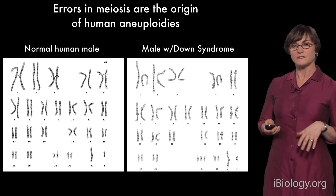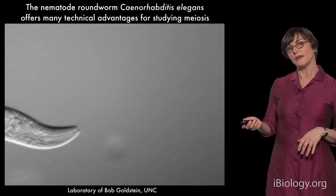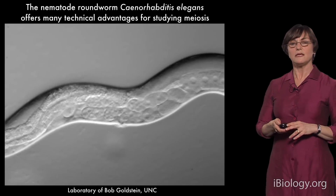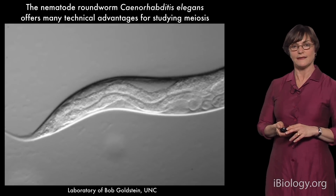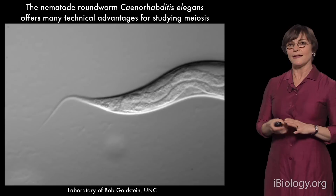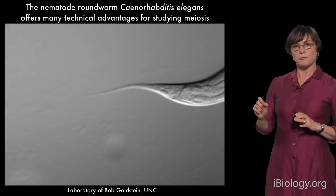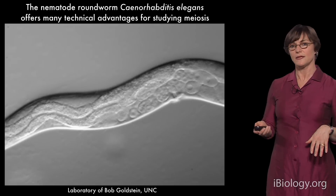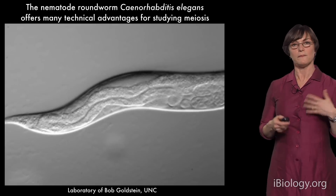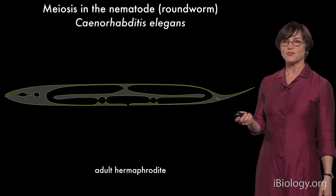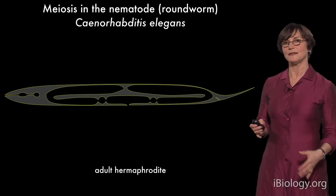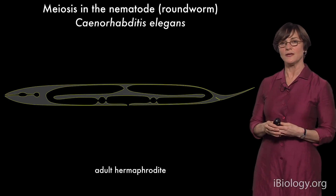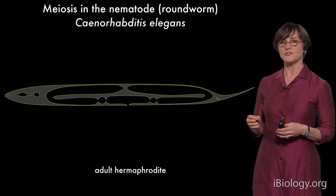On the other hand, meiosis is quite easy to study in some model organisms. The one my lab uses is the nematode Caenorhabditis elegans. It's a great experimental system — these small roundworms are very widely used in studies of neural development and other developmental processes. One of the great advantages of using C. elegans to study meiosis has to do with the anatomy of this animal.